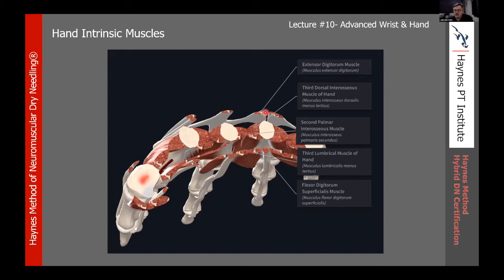One thing we want to be aware of when needling between the fingers is to stay away from direct midline — midline is where we have our neurovascular bundle. Whenever we needle these, we'll needle just adjacent to the medial or lateral surface of the fingers themselves.